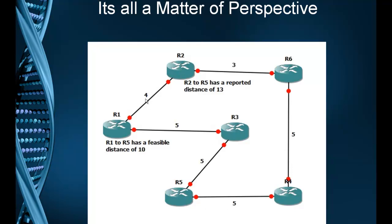But when R2 sends that to R1, R1 records it as the reported distance of R2. R2 has a feasible distance of 13, and R1 has a feasible distance of 10. They both have a best route or best cost to get to R5. But when R2 sends that to R1, R1 records that as the reported distance.